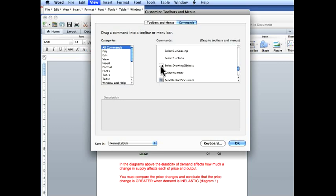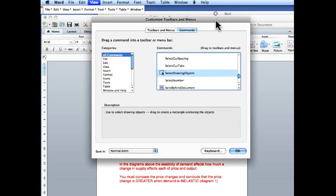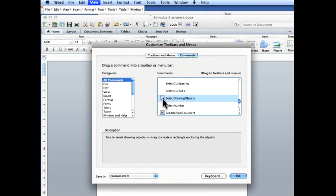Select drawing objects. This is the one. Then you click on it and you can just drag it up onto the toolbar and it will add it in the next available space. I won't do it again because you can see that I've already done it before.